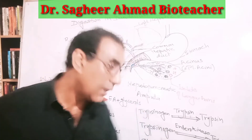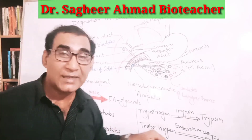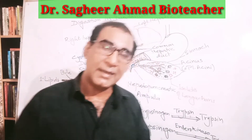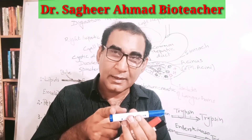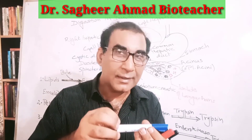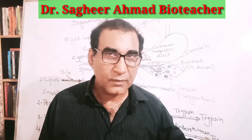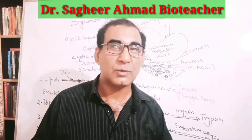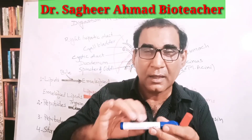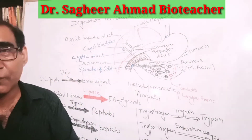In the stomach, peptides and polypeptides are formed. These peptides are acted upon by trypsin in the duodenum and are converted into smaller peptides — not amino acids — because trypsin is not an exopeptidase. Trypsin is an endopeptidase, so it cleaves peptide bonds within the molecule rather than at the ends, producing smaller peptides from larger ones.